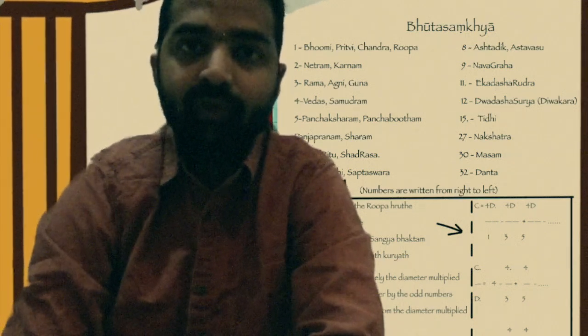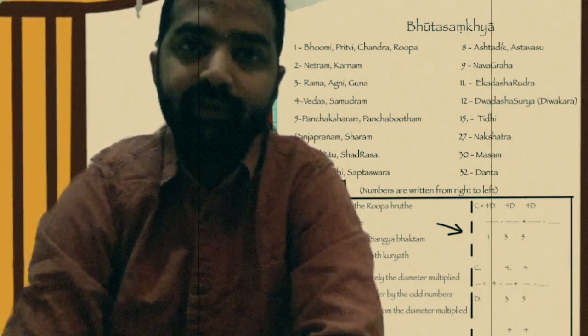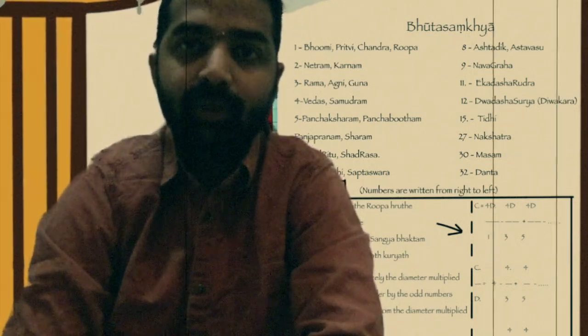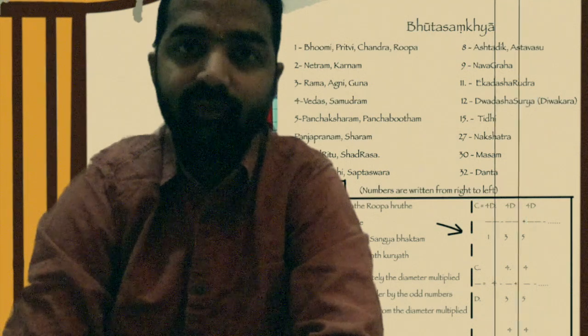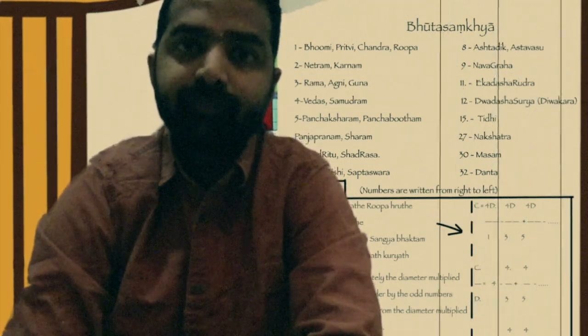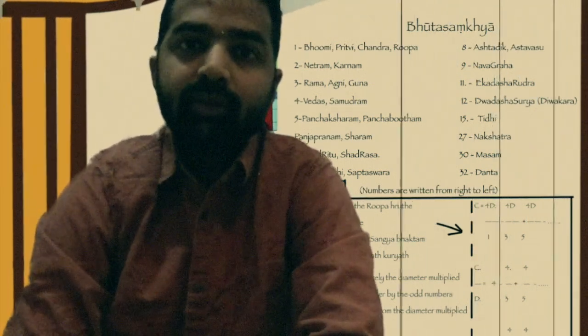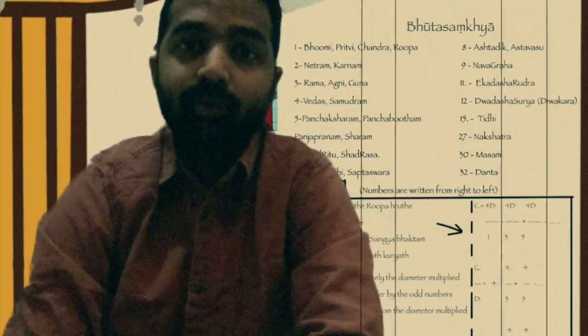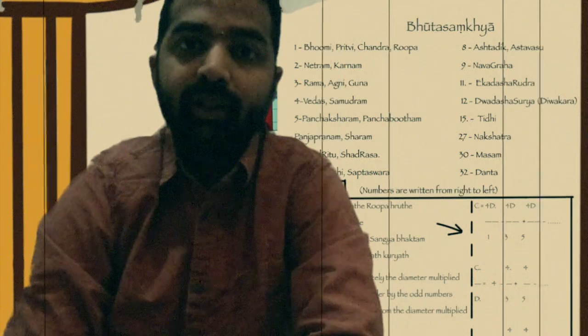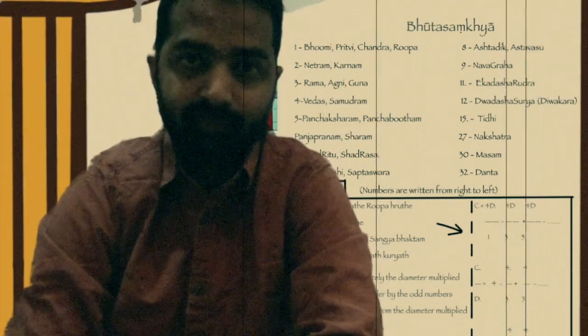Vedas — we know we have got 4 Vedas: Rigveda, Yajurveda, Samaveda, Atharvana Veda. So, Vedas represent number 4. Sagara, Samudram — anything related to the ocean — also represents number 4.